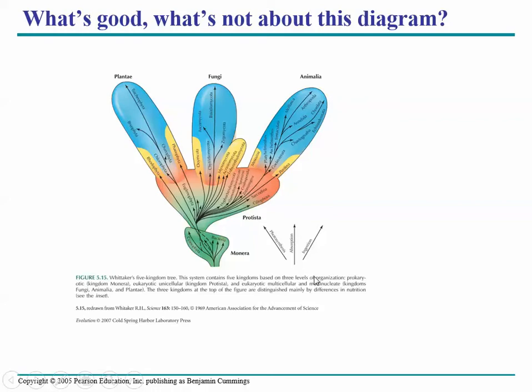If you ever took a philosophy class, maybe you heard of Descartes who said 'I think, therefore I am.' The Dillon version paraphrasing that: 'I eat, therefore I am an animal.' Because that's the biological definition of an animal — if you are a multicellular eukaryotic organism that eats, you are an animal.